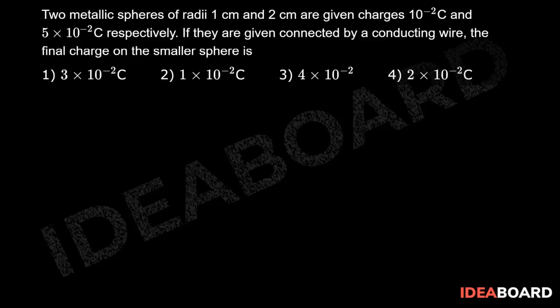Two metallic spheres of radius 1 centimeter and 2 centimeter are given charges 10 to the power minus 2 coulomb and 5 into 10 to the power minus 2 coulomb respectively. If they are now connected by a conducting wire, then the final charge on the smaller sphere is...